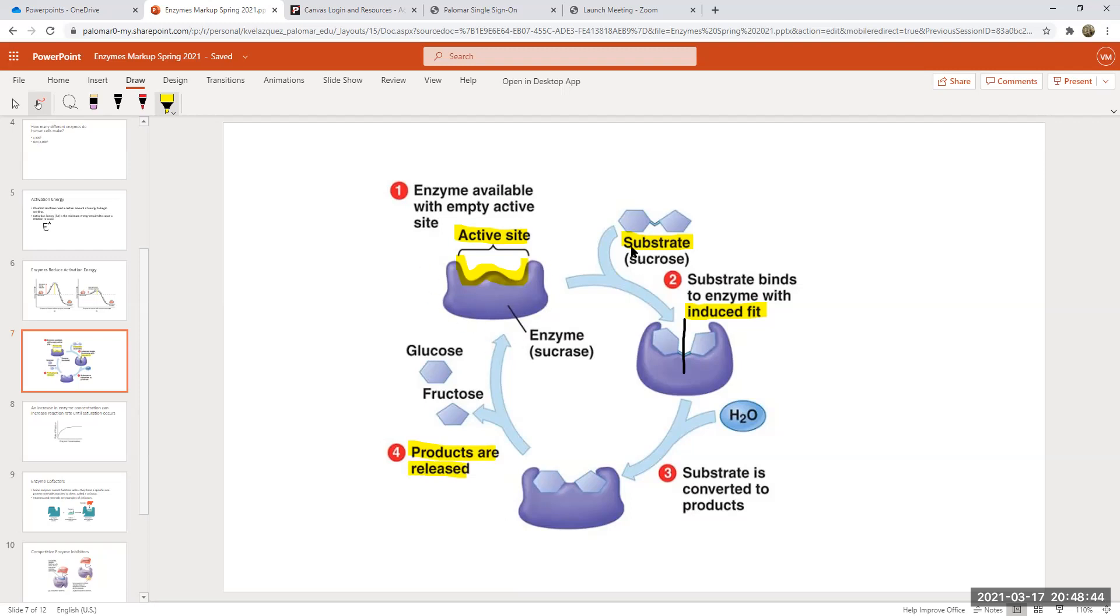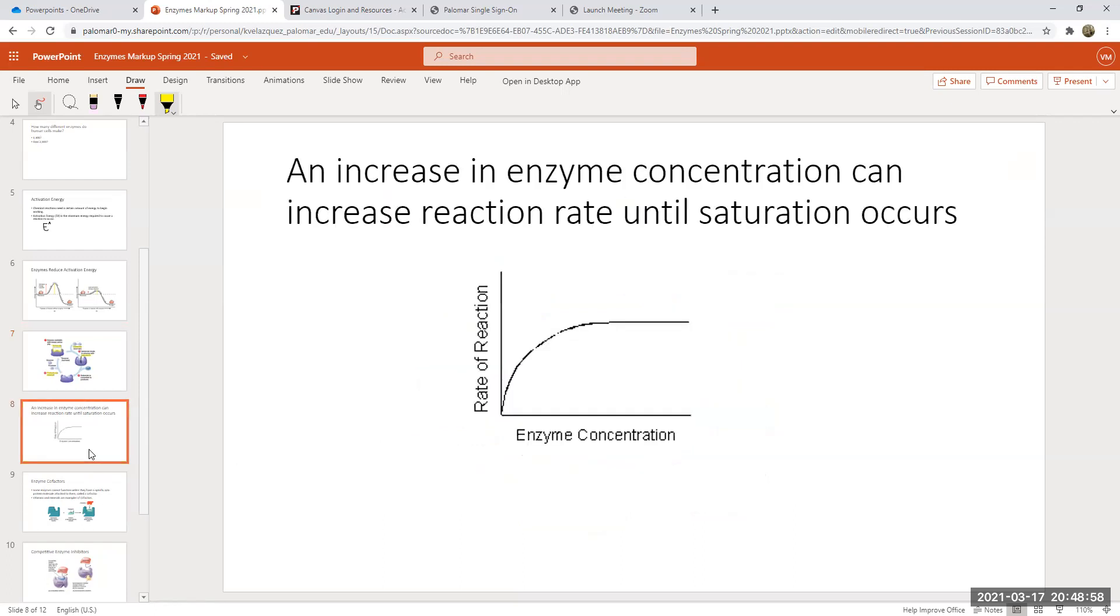If you have a lot of substrate around, you'll start making more enzyme. And over time, you can just really keep making more enzyme and get that reaction rate to increase. But at some point, there's only so much substrate available. So increasing enzyme concentration can increase reaction rate, but at some point, saturation is going to occur. You can see here, it's increasing, increasing, increasing. And then at some point, it starts to level out because now all of the substrate has bound to an active site of an enzyme, and you can't really increase the rate anymore.